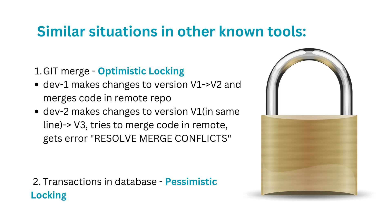A second example of how conflicts arise is database transactions. When multiple requests try to access the same piece of data, to comply with the isolation property of ACID, the database provides a lock to the first transaction so no other transaction can make changes until it's done. This way of preventing conflicts is called pessimistic locking. Real-time collaboration tools do not use either of these approaches.